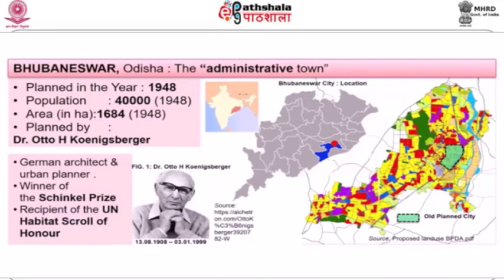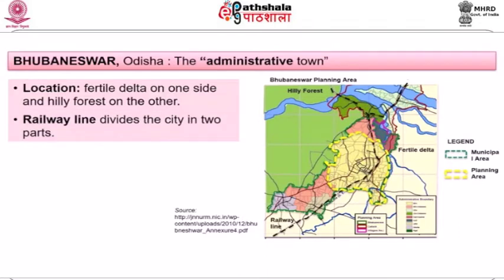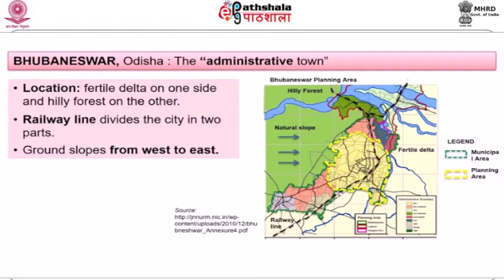The location of Bhubaneswar shows forests on one side, rivers on another, and land sloping from west to east. It was situated on a fertile delta on one side and hilly forest on another. The railway line divided the city in two parts, and the ground slope runs from west to east — that was the setting of Bhubaneswar.